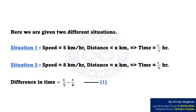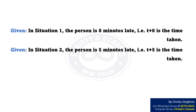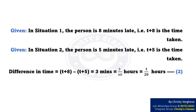The difference in time equals X/5 minus X/8 — let this be equation 1. Given that in situation 1 the person is 8 minutes late, the time taken is T plus 8. In situation 2, the person is 5 minutes late, so the time taken is T plus 5. Difference in time equals (T + 8) minus (T + 5), which equals 3 minutes. This equals 3/60 hours, that is 1/20 hours — let this be equation 2.